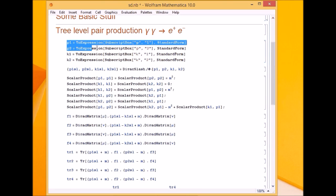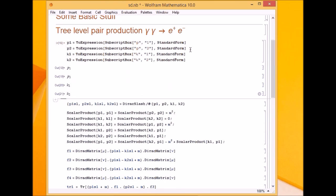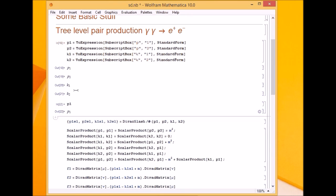What this chunk of code does is it defines the notation. ToExpression is a Mathematica command which basically assigns the following expression to p1. The expression is subscript. SubscriptBox is a command which takes two arguments, p, 1, and it gives the result like this, p subscript 1. Basically whenever I write p1, Mathematica knows it's p underscore 1. This is what the ToExpression does.